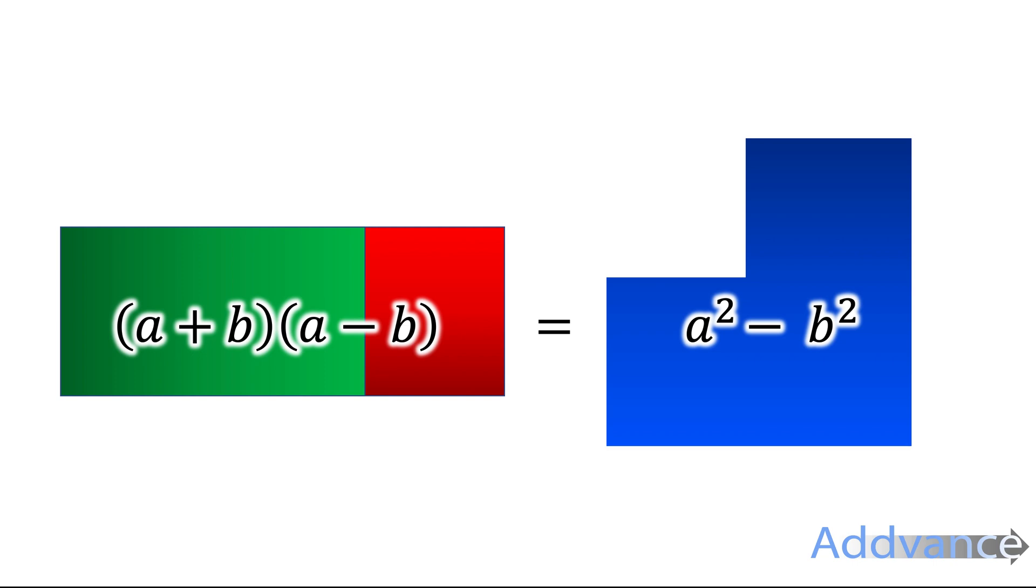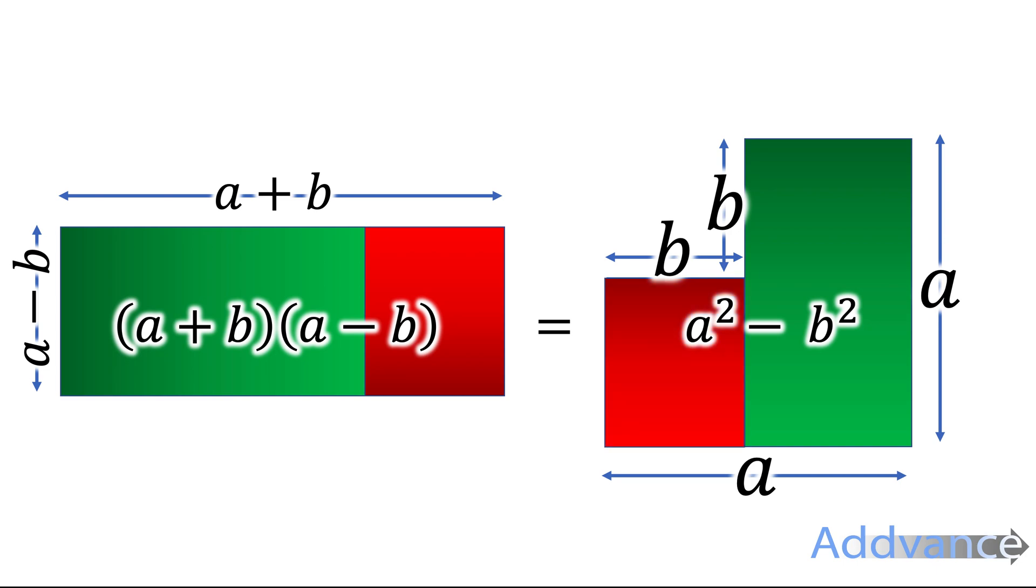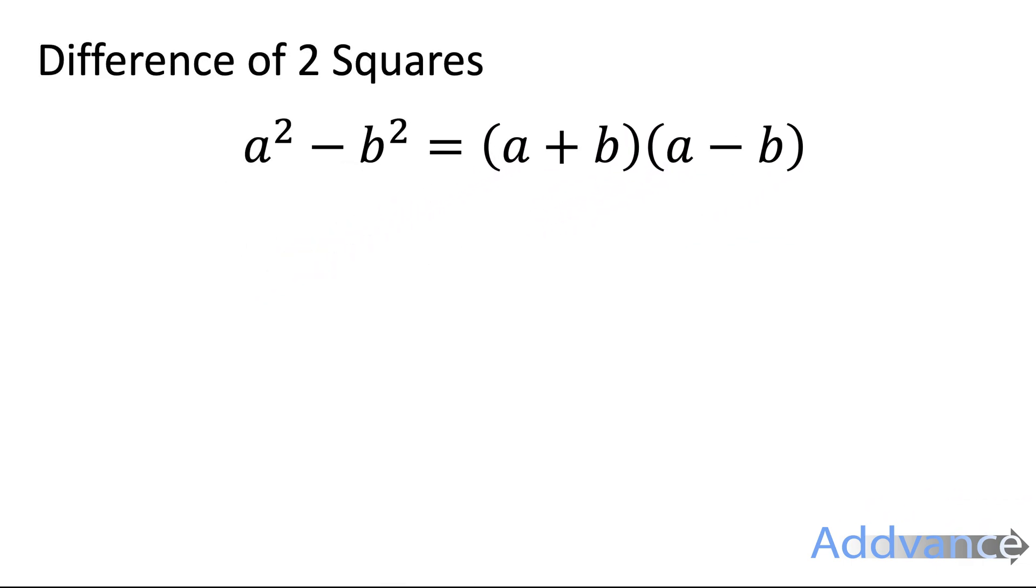But as you saw before that is exactly the same as a squared minus b squared. And those two areas are exactly the same. And that is showing us that a squared minus b squared is the same as (a + b) times (a - b). So this is a fact in maths. a squared minus b squared is the same as (a + b) times (a - b).